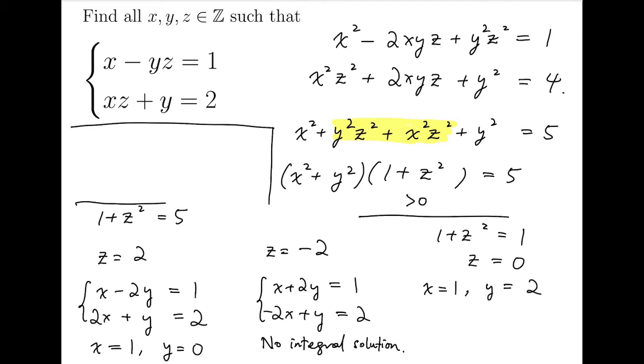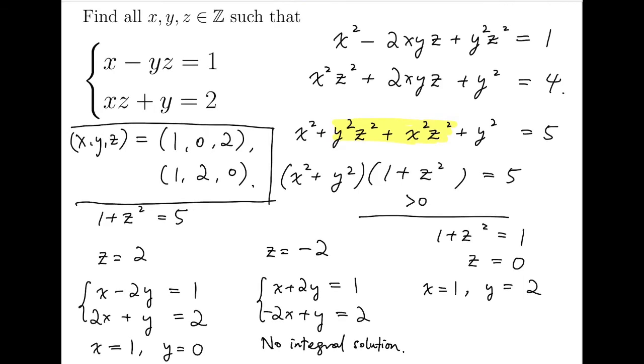Finally, the final solutions are (1, 0, 2) and (1, 2, 0). And these are the only two solutions that we are going to have. So this is the end of the first problem.